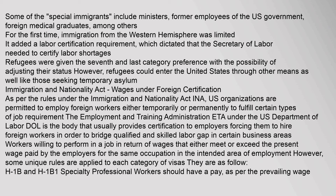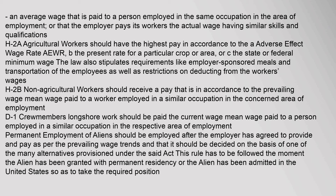H1B and H1B1 Specialty: Professional workers should have pay as per the prevailing wage — an average wage paid to a person employed in the same occupation in the area of employment — or the employer pays its workers the actual wage for those having similar skills and qualifications. H2A Agricultural workers should have the highest pay in accordance with the Adverse Effect Wage Rate (AEWR), the prevailing rate for a particular crop or area, or the state or federal minimum wage.